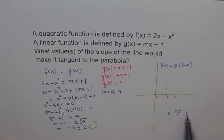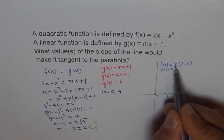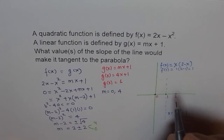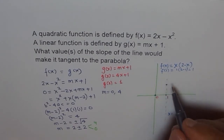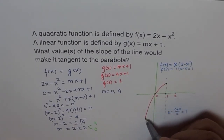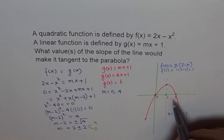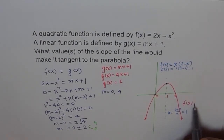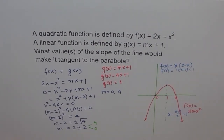The axis of symmetry is at x = 1. f(1) = 2(1) - (1)² = 2 - 1 = 1, so the maximum is at (1, 1). From this we can draw the parabola f(x) = 2x - x². Now let's look at the tangent lines we found.